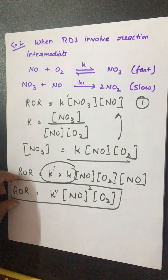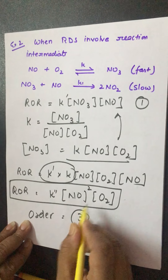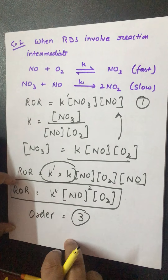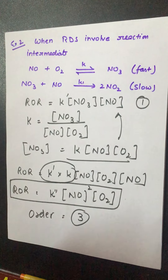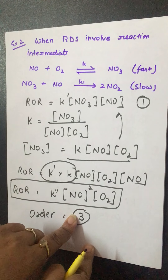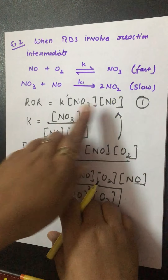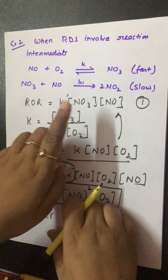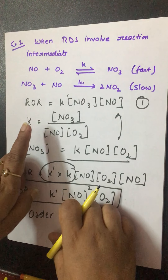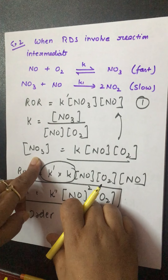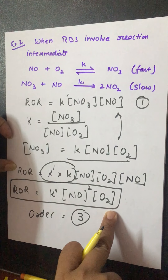So for this mechanism, the final rate of reaction is ROR = K''[NO]²[O2], and the order is 3 (2 + 1). It looks complex at first sight but is actually straightforward once you practice. The steps are: write down the rate according to the slowest step, identify the reactant involved in the equilibrium step, write the equilibrium constant, find the concentration value, and substitute it in to get the final RLE.